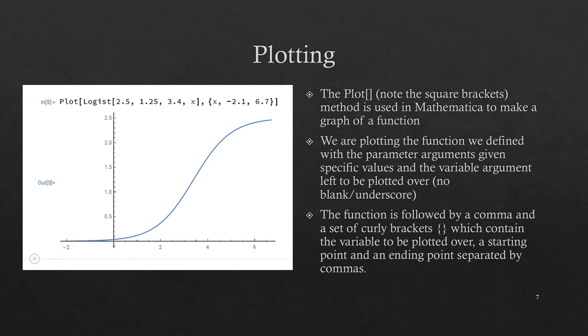And then in there, once again, we rename again the variable that we are plotting, here x, and then a starting point, minus 2.1, and an ending point, 6.7. Close the curly bracket and then the closing square bracket that belongs to the plot method.